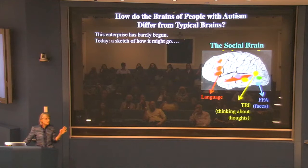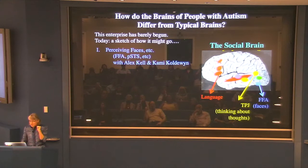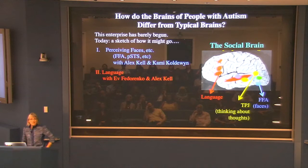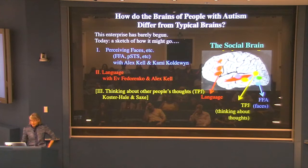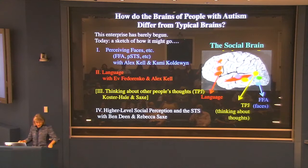This enterprise is in very early days, and most of the data I'll show is preliminary. Here's what I'm going to cover: first, we'll look at face processing regions and ask if they're different in people with autism. Second, we'll look at language processing regions and ask whether they look different in people with autism. Third, I'll briefly mention some really cool data by Rebecca Sachs and Jory Coster-Hale.